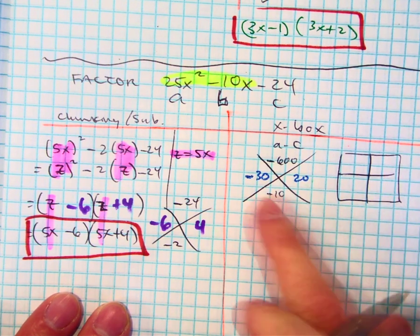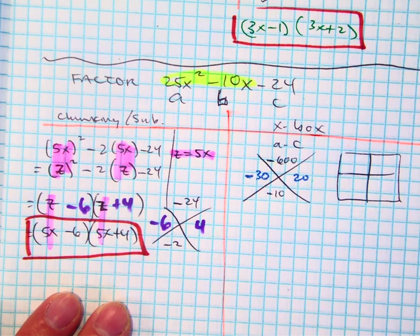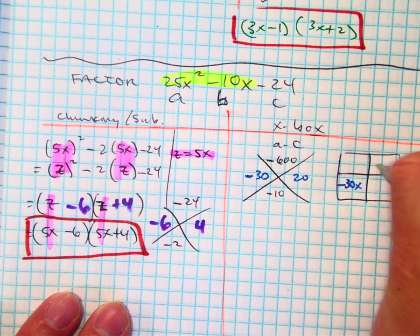If you're just barely grasping this x in this box method, just keep doing it. X in the box. X in the box. Negative 30x. 20x.